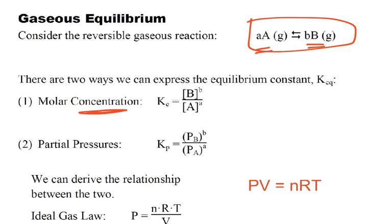If we do that in terms of concentrations, then we call that Kc, and we can see what it is: the concentration of B raised to the B power over the concentration of A raised to the A power, and that is the equilibrium constant Kc.